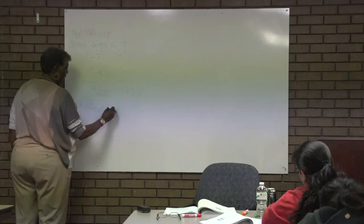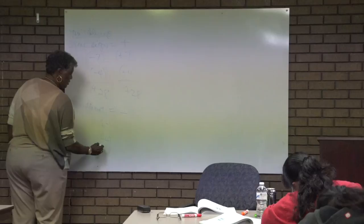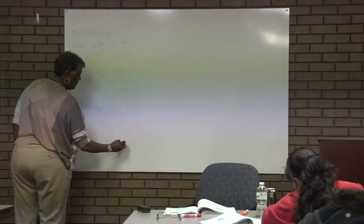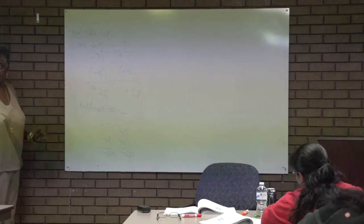Always. So if I have a positive 7 times a negative 4, it's going to be a negative 28. If I have a negative 7 times a positive 4, it's going to be a negative 28. So when you multiply, it's easy: same sign positive, different sign negative.